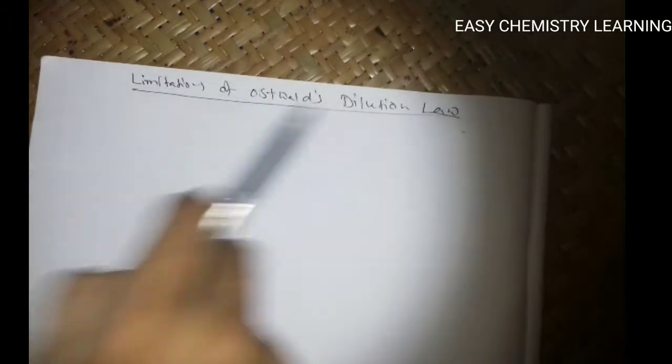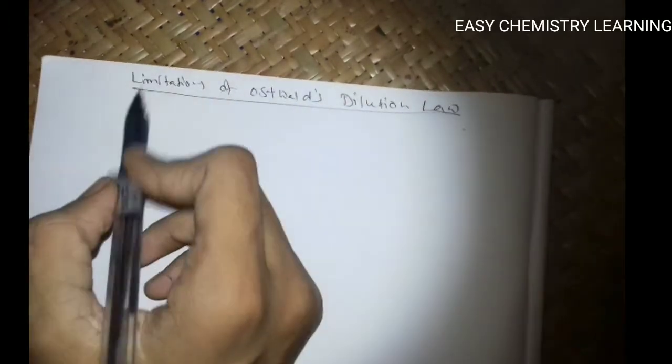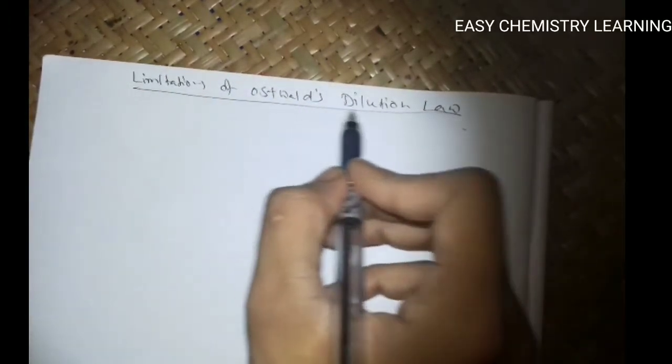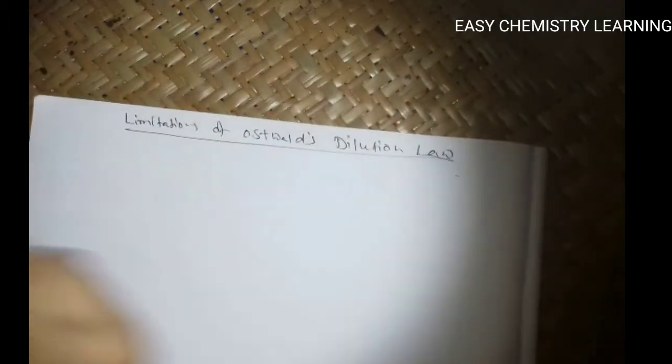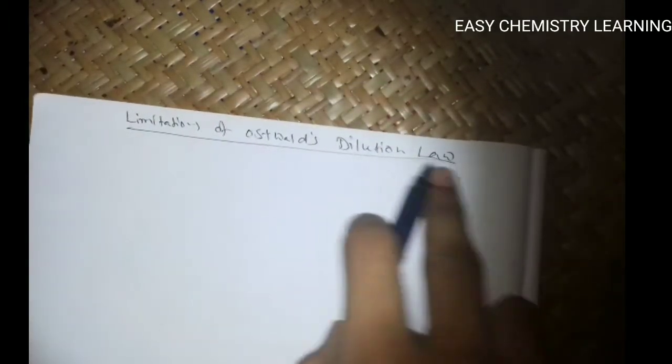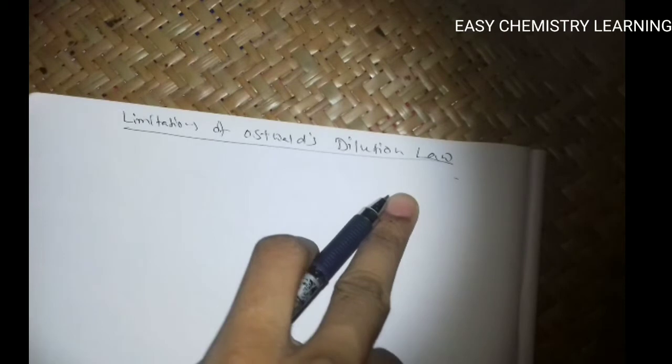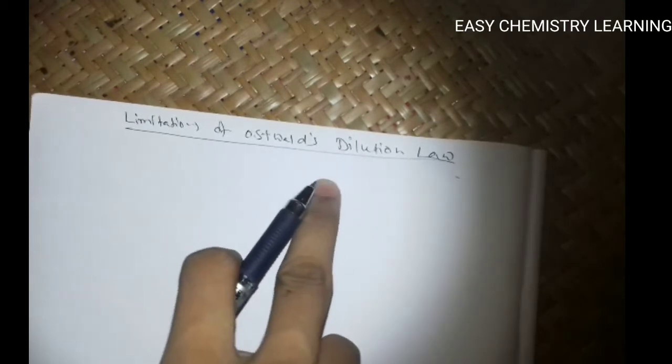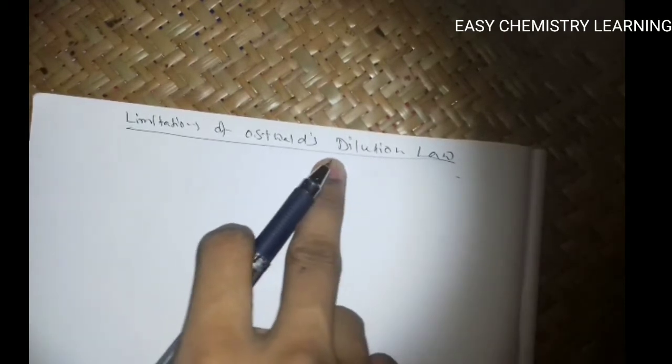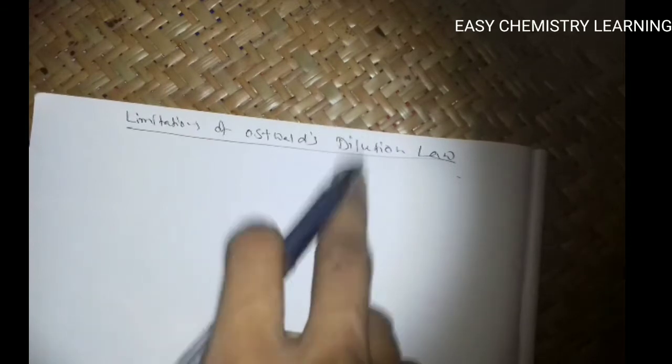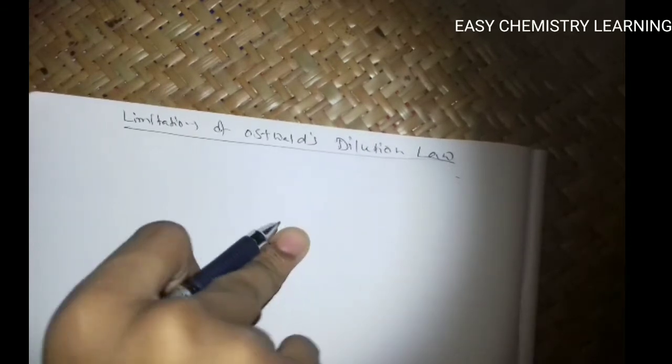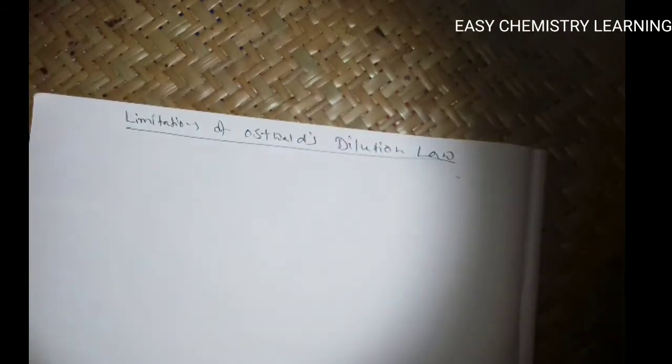So friends, now we will discuss the limitations of Oswald's dilution law. You have understood what Oswald's law is. It obeys only in the case of weak electrolyte. So what are its limitations?